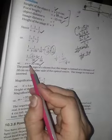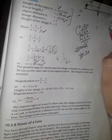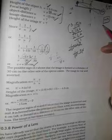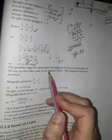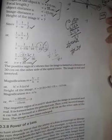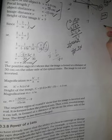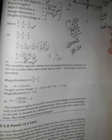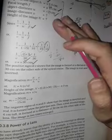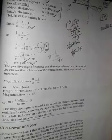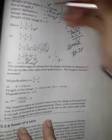The positive sign shows that the image is formed at a distance of 30 cm on the other side of the lens. The image is real and inverted.